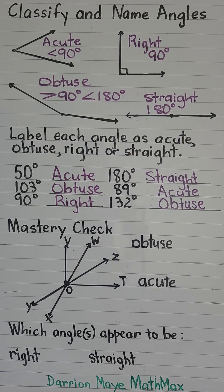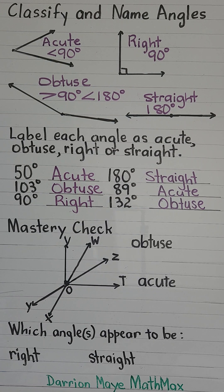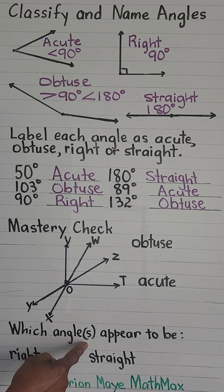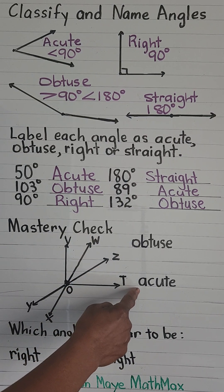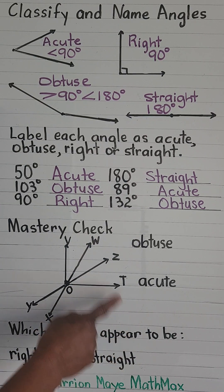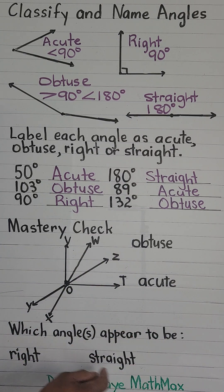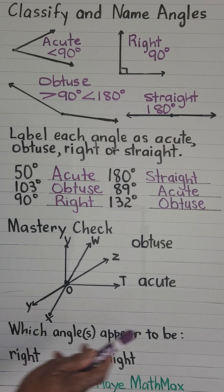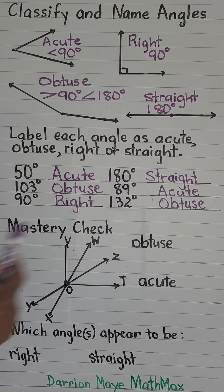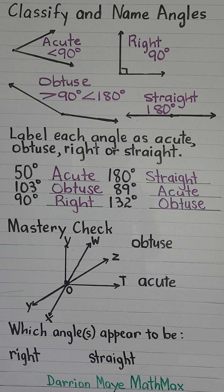Now let's do a mastery check. Here we have a figure with several different angles. Our task is to identify which angle appears to be right, straight, obtuse, or acute. I'm going to give you a few seconds to name at least one right angle, one straight angle, one obtuse, and one acute — and then we'll go over it together.